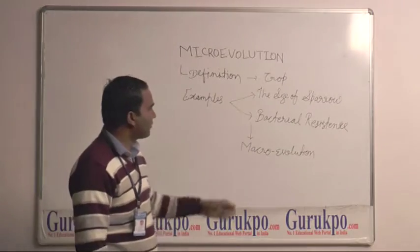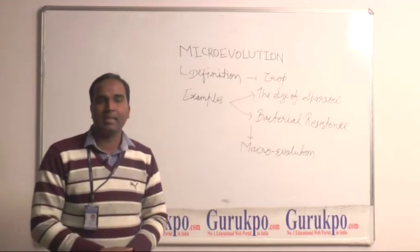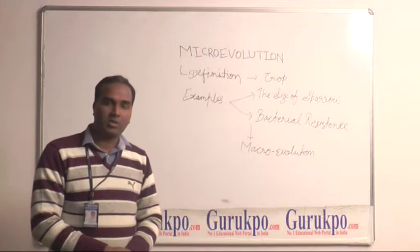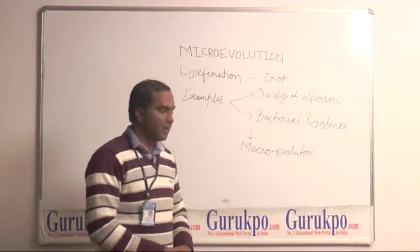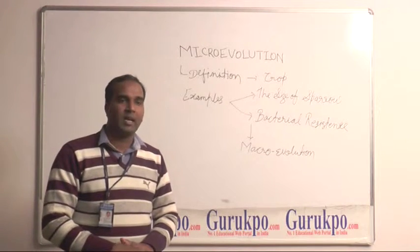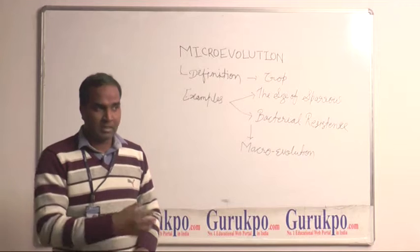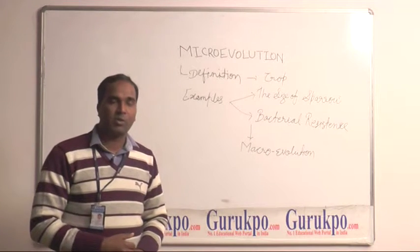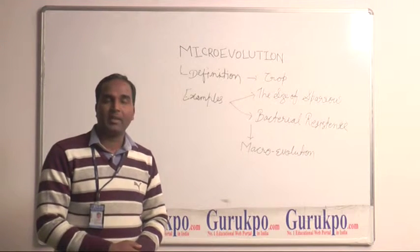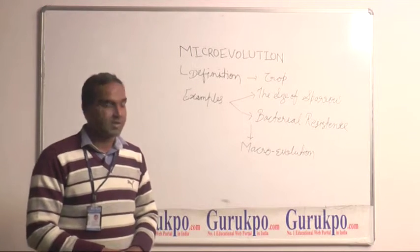The first example in favor of microevolution is the size of the sparrow. The sparrow found in North America is larger, and comparatively the sparrow found in South America is smaller. The sparrow in North America is warmly adapted and not easily adapted in the cooler areas of North America.